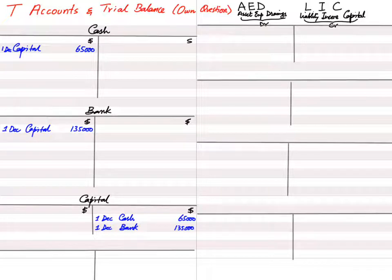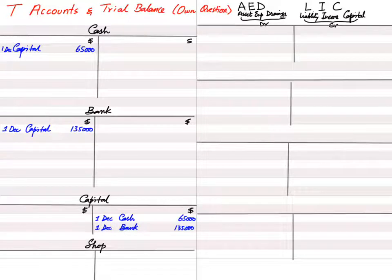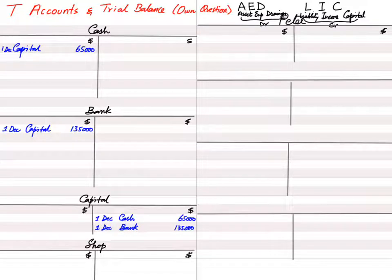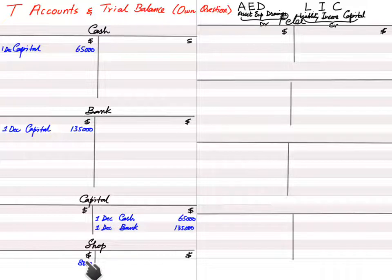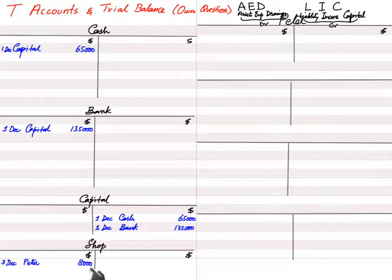The 2nd transaction: on 3rd December, we bought a shop for $8,000 from Peter, agreeing to pay within 8 months. The shop is a non-current asset — a premises — so a shop account is opened and debited, because an asset increases with a debit. We haven't paid Peter yet, so Peter is our creditor. The journal entry is: debit shop account with reference 'Peter,' and credit Peter's account with reference 'shop.'